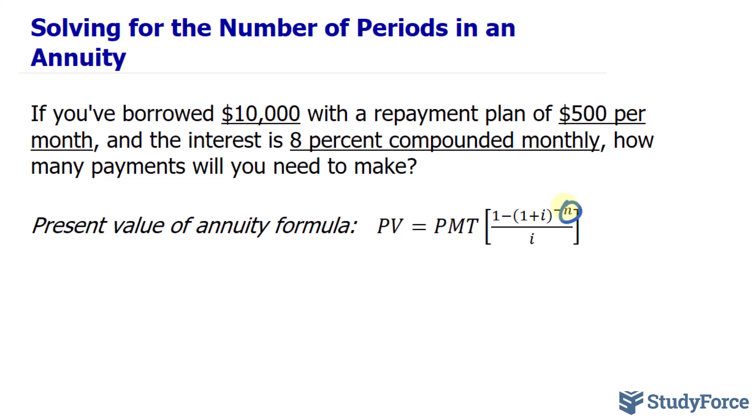Here we have a situation where we know the present value, which is $10,000. We know the payment frequency and the amount per period, which is $500. And you also know the nominal interest rate, which is 8% compounded monthly. How do we find how many payments will be required to pay off this $10,000 loan?